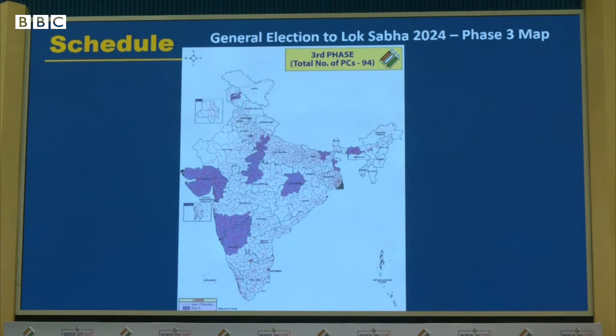Phase 3 may teen rajyon mein chunav shuru hoga. The map will look something like this — Rajasthan will be covered, Tamil Nadu will be covered, Kerala will be covered, Gujarat will be covered, and the North East will be covered.